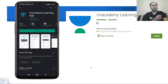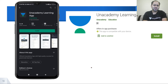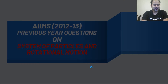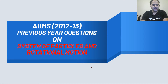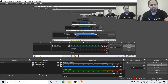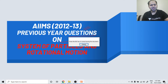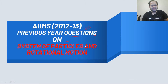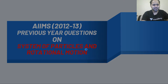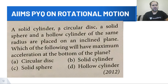Unacademy Learning App को Play Store से download करना है, install करना है, उसके बाद register करेंगे और सारे features access कर पाएंगे. आज का हमारा topic है AIIMS 2012-13 के अंदर previous year questions on system of particles and rotational motion — तो देखते हैं. पहला question है: